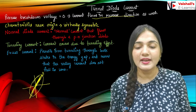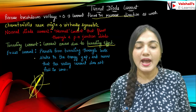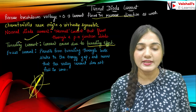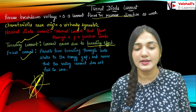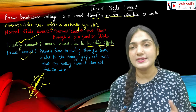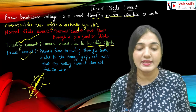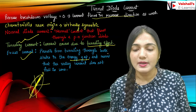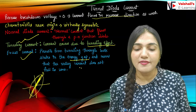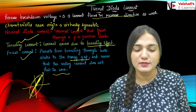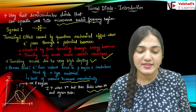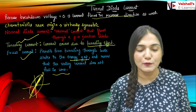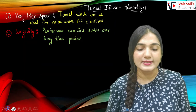The tunneling current arises due to the tunneling effect. We also have some excess current. So first is normal diode current, then we have the tunneling current, then we have the excess current. Normal diode current is present in forward bias, tunneling current is due to the tunneling effect, and the excess current results from tunneling through bulk states in the energy gap — meaning the valley current does not fall to zero. You can see that due to the excess current, this valley current never falls to zero.